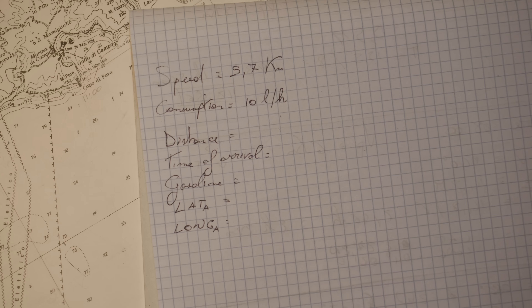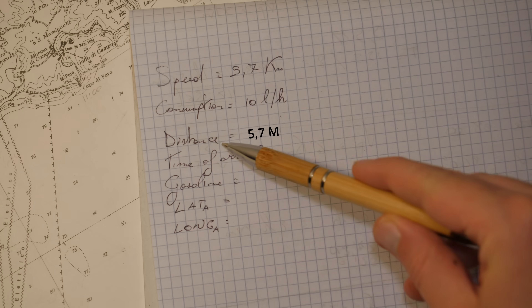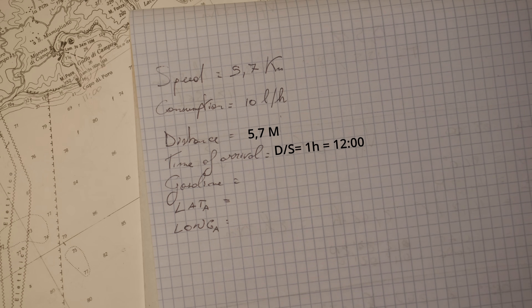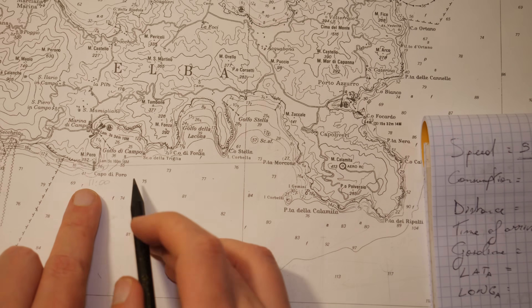This means that if I leave at 11 AM and my speed is 5.7 knots — meaning 5.7 nautical miles per hour — by dividing my distance by the speed, I arrive at Punta Morcone in one hour, so at 12 PM, right in time to prepare lunch. Let's write the expected time of arrival on the map.